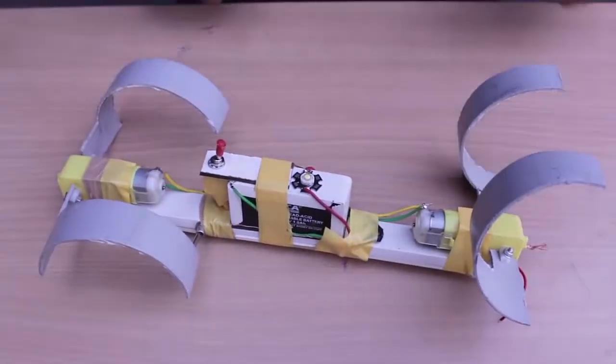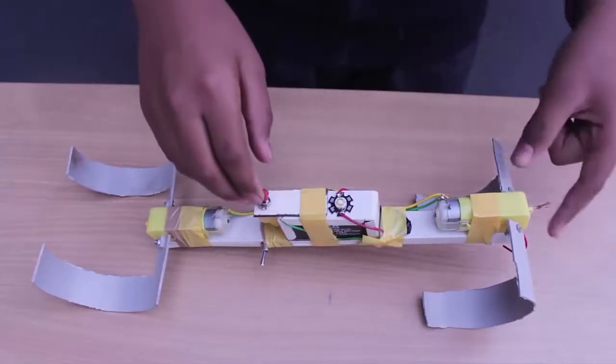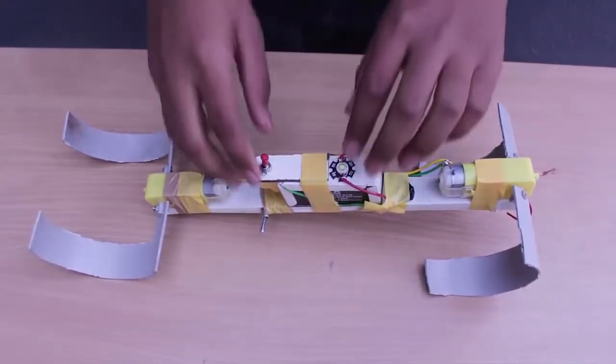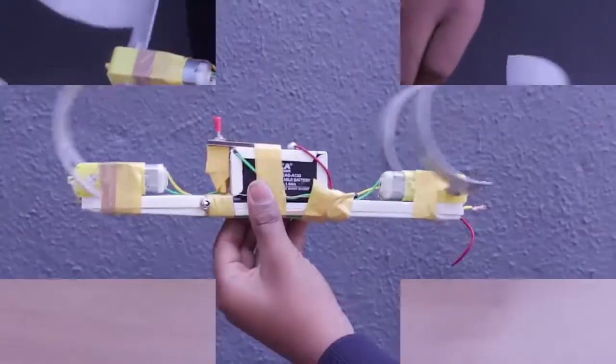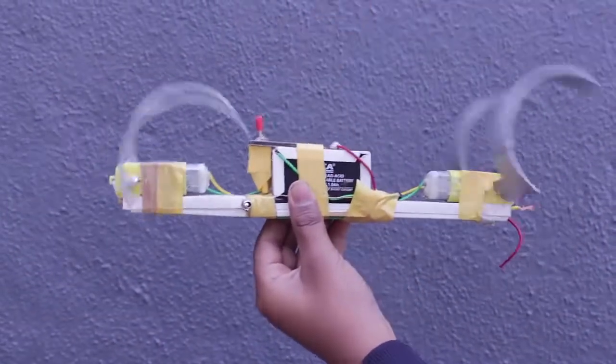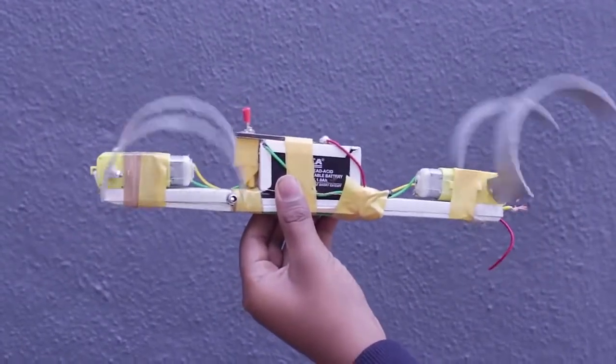Now keep all the semi-circular wheels in the same orientation and switch on the circuit. Here you can see the semi-circular wheels moving in the air. Then place the crawler on the ground and see it in action.